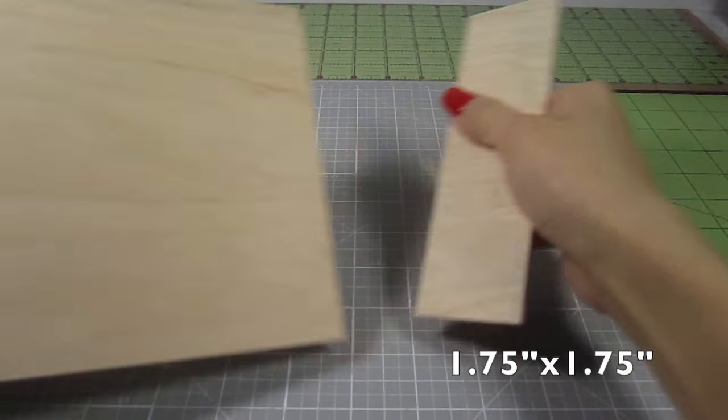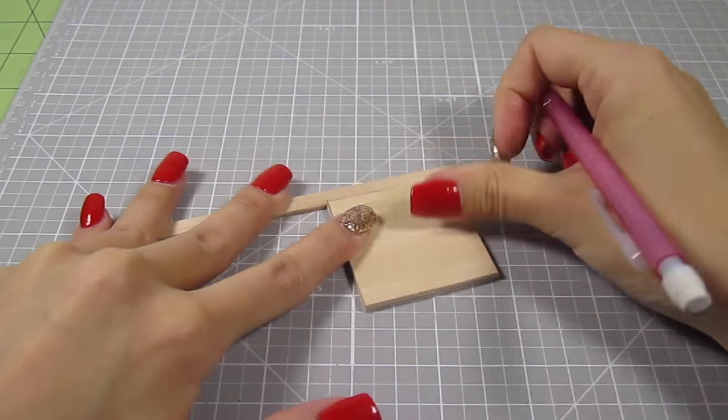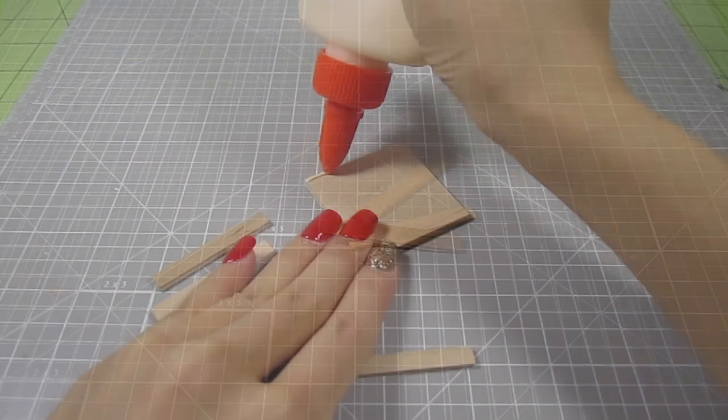Almost there guys. One last drawer to make. Cut out a 1 1⁄3 inch square from that same craft plywood. Do the same method as before with more coffee stirrers for the sides. Glue those on.